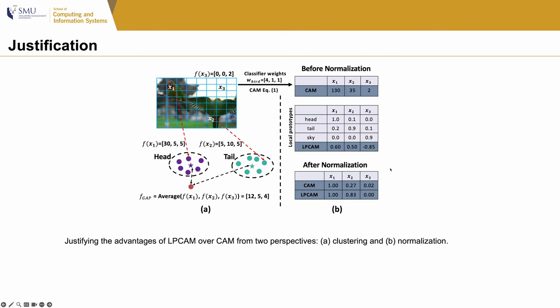We justify the effectiveness of LPCAM from two perspectives: clustering and normalization. From the clustering perspective, as shown in figure A, X1 and X2 go to different clusters, determined by their dominant feature dimensions. For example, the first dimension of f(x1) is high, and so is the second dimension of f(x2). Thus, the feature computed by global average pooling may be dominated by one dimension, but our clustering-based method can preserve all features.